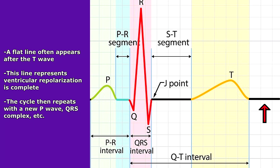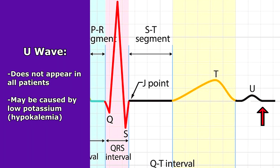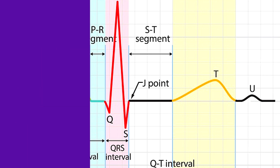Then the cycle starts immediately again, where you get a new P wave, QRS complex, T wave, and it just keeps going on. Now sometimes after the T wave you may see a U wave. It's not the case in many patients, but in some it may occur because the patient's potassium level is low, as in hypokalemia.